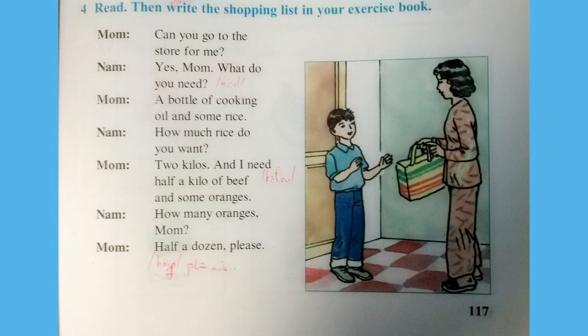Exercise 4: Listen and read, then write the shopping list in your exercise book. Can you go to the store for me? Yes, ma'am. What do you need? A bottle of cooking oil and some rice. How much rice do you want? Two kilos. And I need half a kilo of beef and some oranges. How many oranges, ma'am? Half a dozen, please.